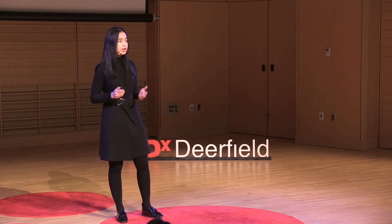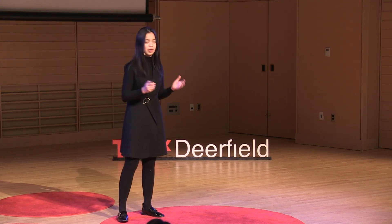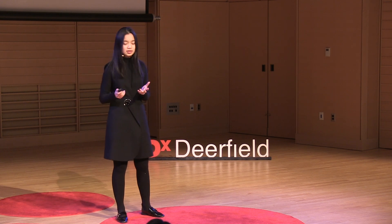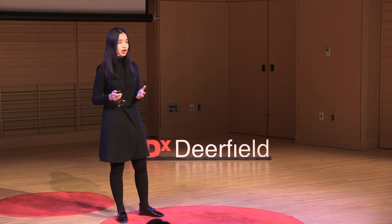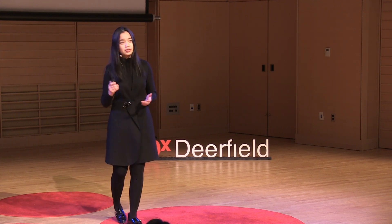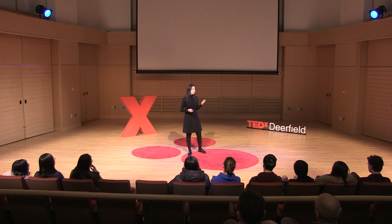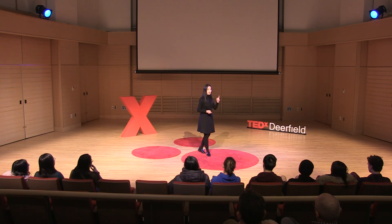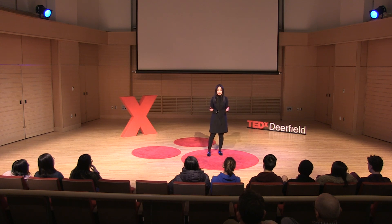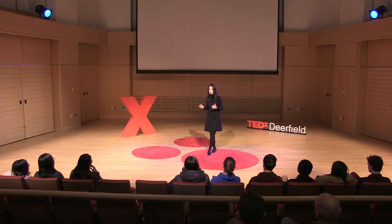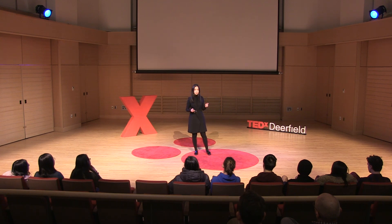Now we need to find the building blocks of our natural number system, which are the numbers. Namely, we are going to define what 1 is and what 2 is. First of all, we need to put one element inside this world of emptiness to secure our position in this empty universe. We call this element 0.